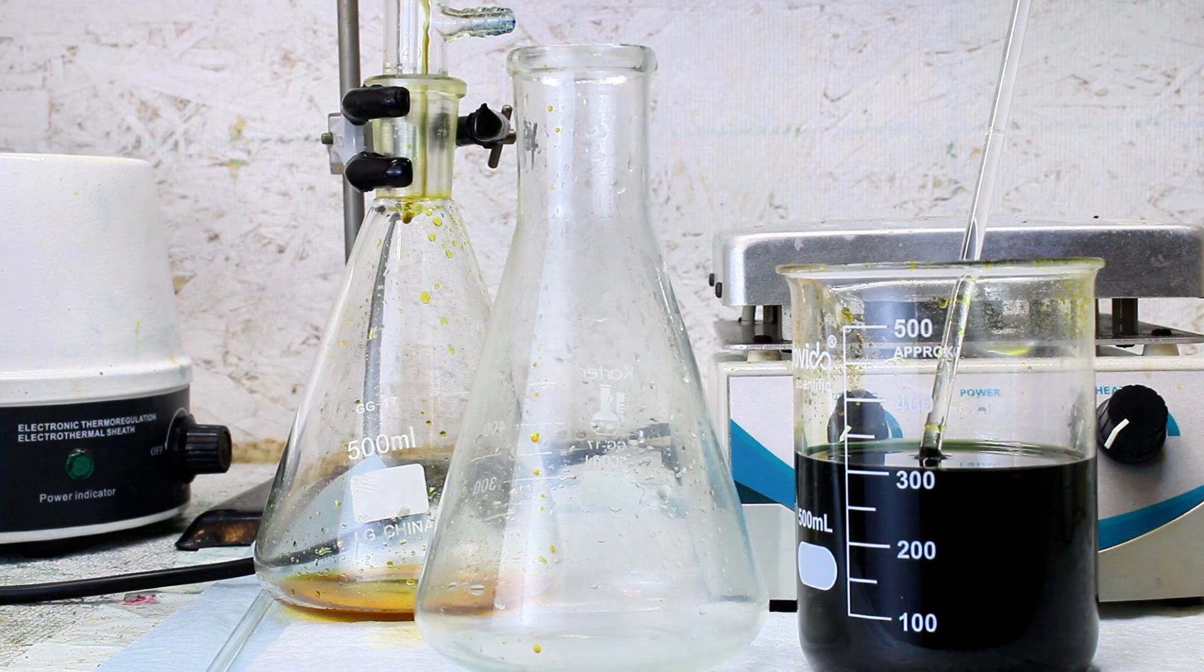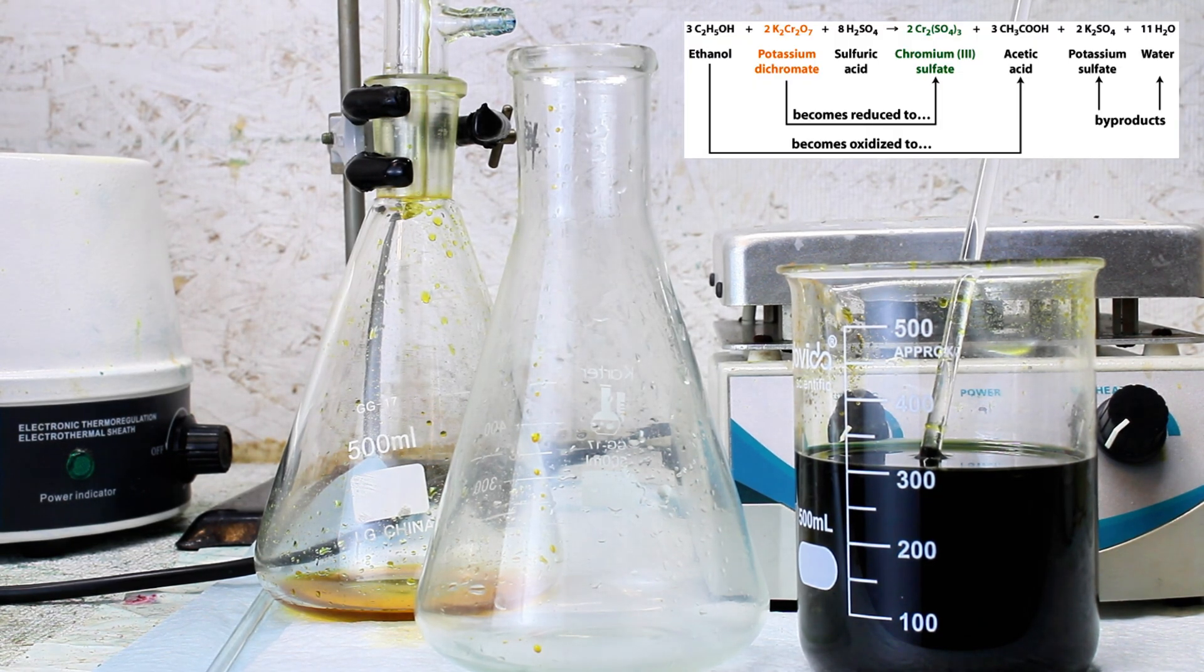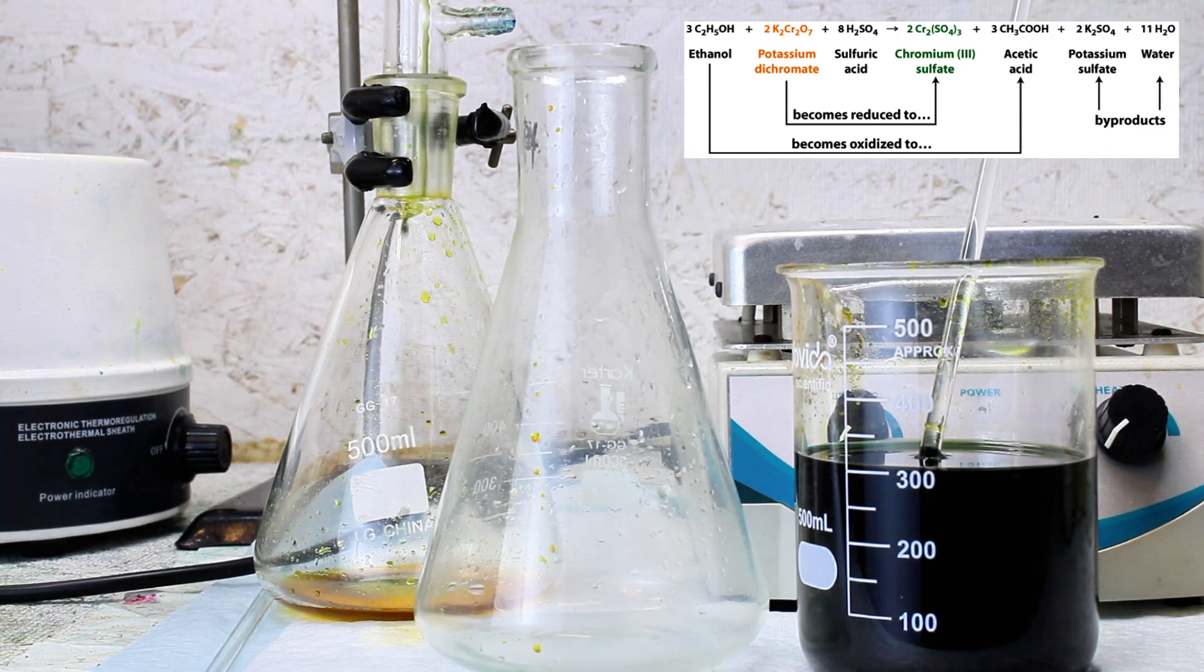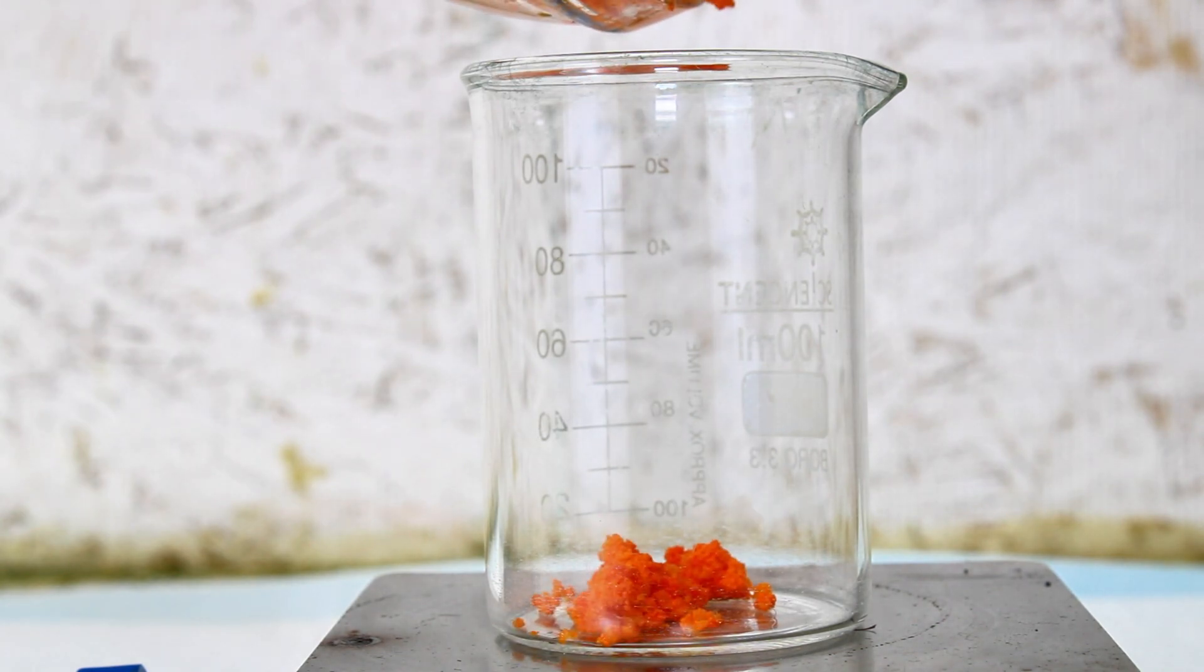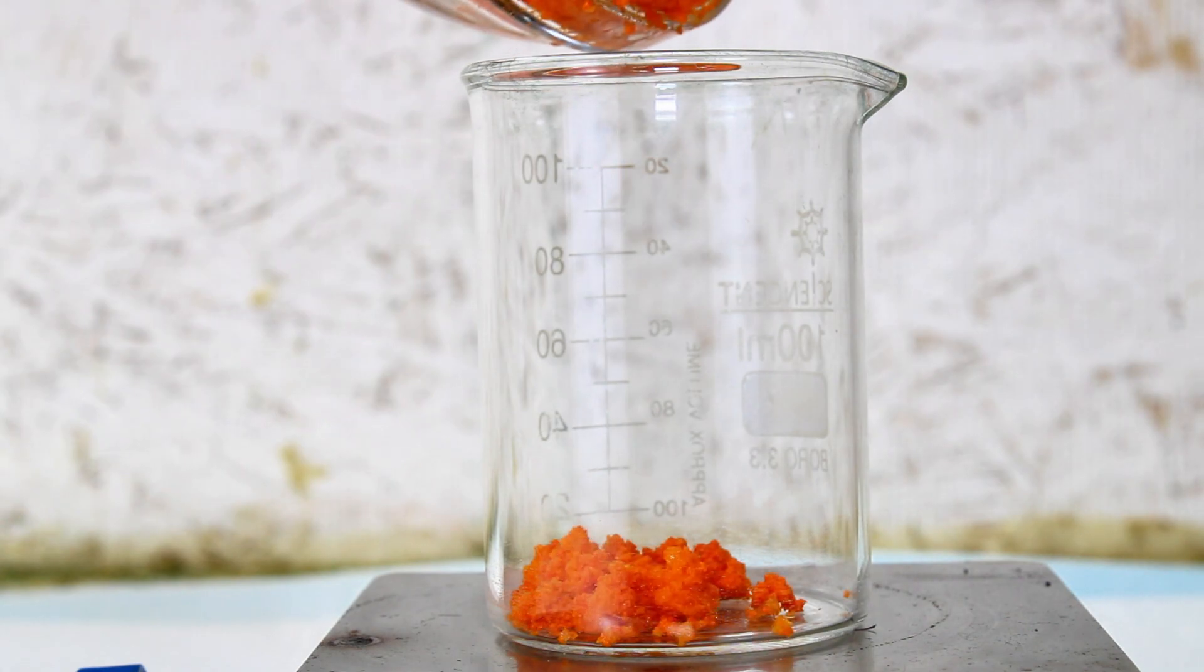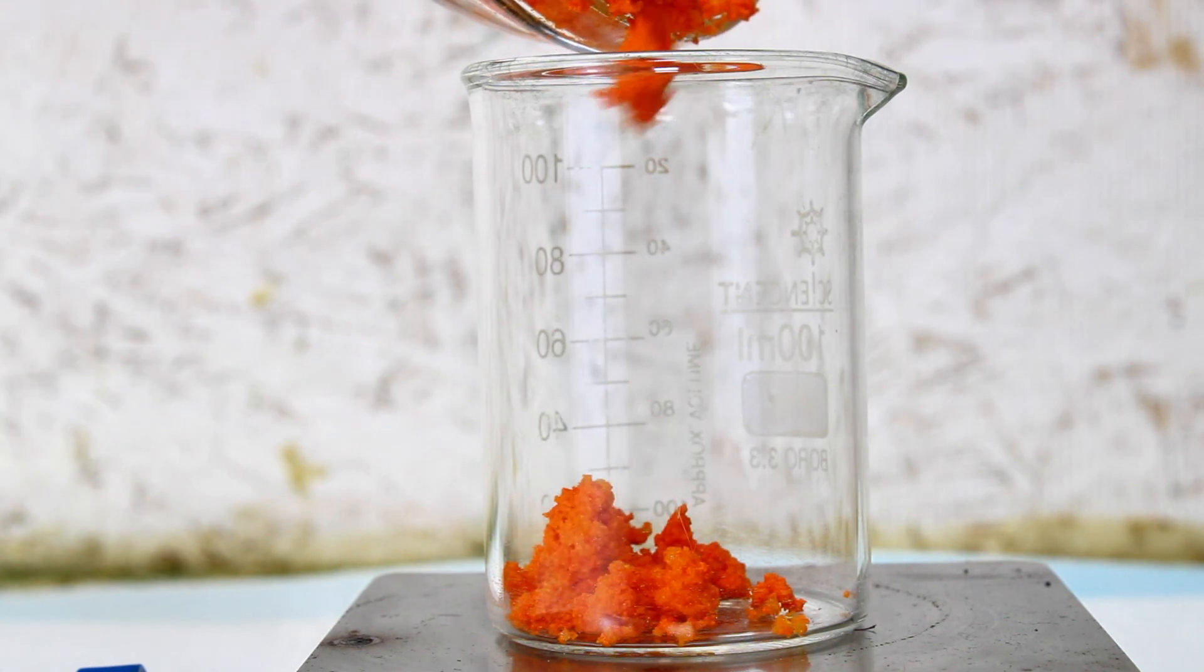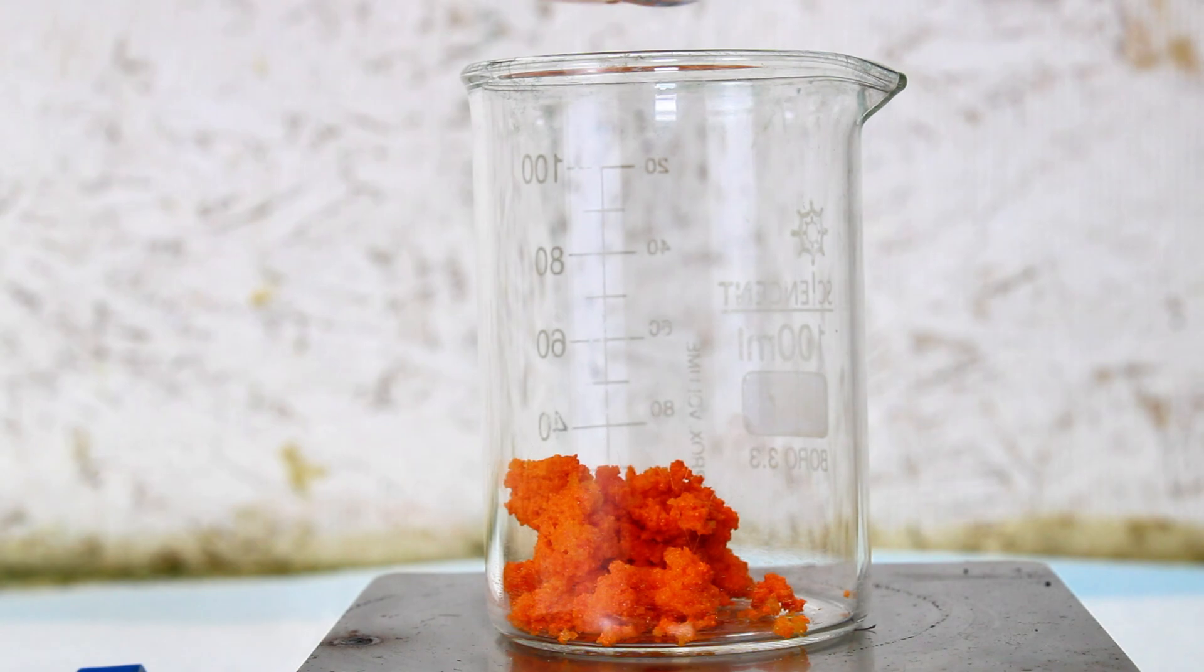Dichromate can also be used to qualitatively test for reducing agents or alcohols by turning to the green trivalent state in their presence. Chromate and dichromate behave nearly identically in solution, and the main reason potassium dichromate is so strongly preferred in most chemistry labs is that unlike sodium chromate or dichromate, it's not hygroscopic.